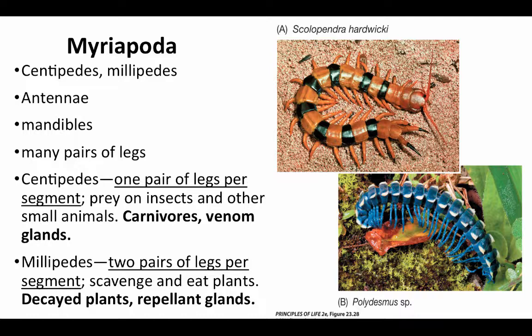Myriapods include the centipedes and millipedes. These are arthropods with jointed legs and appendages, including antennae — which are modified appendages — mandibles, and mouth parts that are also modified versions of segmental appendages. In centipedes, there is one pair of legs per segment. These are predatory arthropods that prey on insects and other small animals, so they're carnivorous, and they produce venom — these are poisonous.